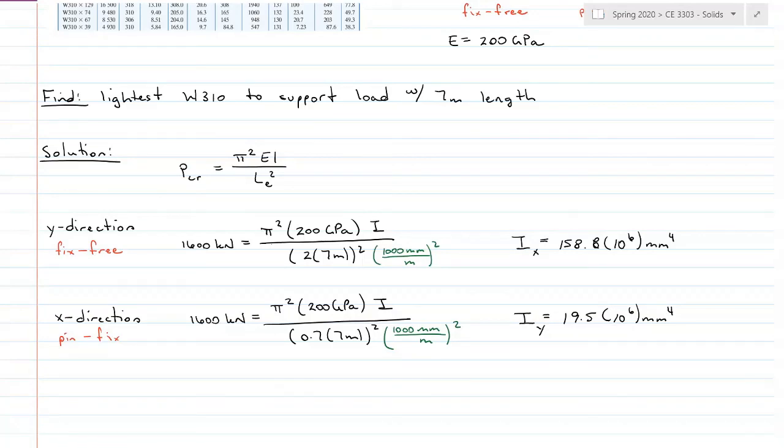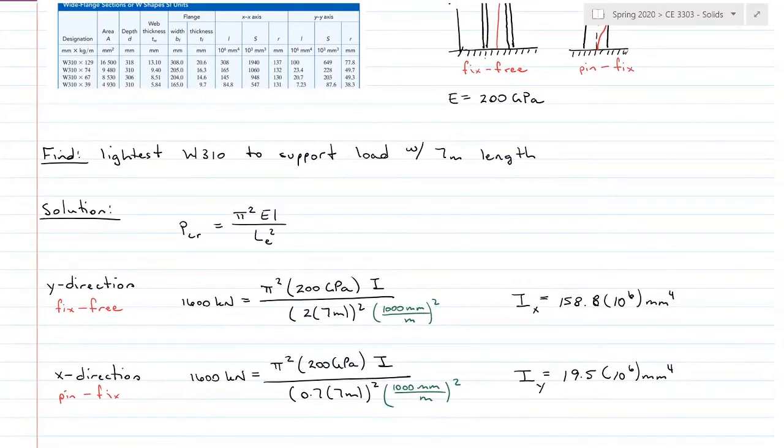So looking at I_X and I_Y here, and these are minimum values. If we have larger values, we have less stress. Bigger inertia, less stress. So I need to find a value that's equal to or greater than 158.8 for that X direction. So coming here, I don't have 158.8. I have 145 and 165. So this one is going to require a W 310 by 74 for the inertia.